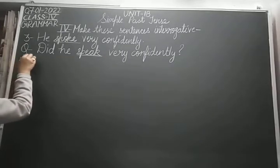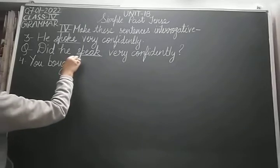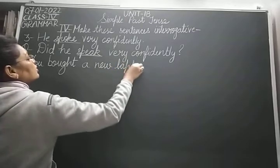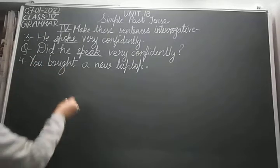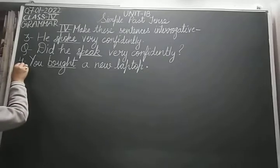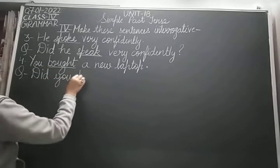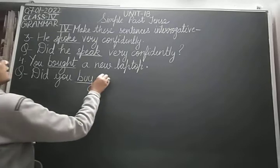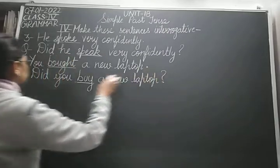Then the fourth one: 'You bought a new laptop.' First, identify and underline the verb. We need to bring the verb back to its root form in the interrogative sentence. In simple past tense, we begin our question with 'did.' The root form of 'bought' is 'buy.' So: 'Did you buy a new laptop?' And at the end, we put a question mark.